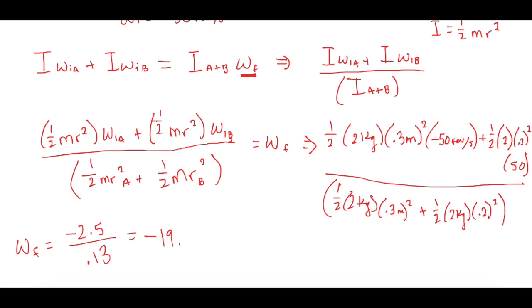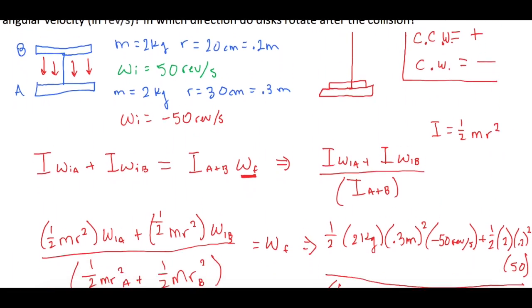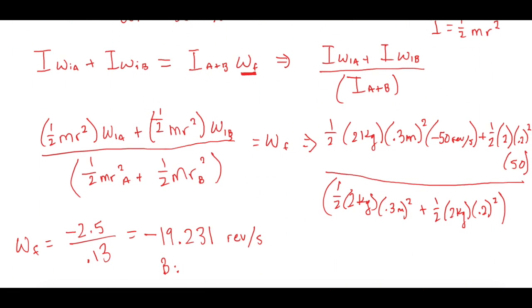So when we take negative 2.5 and divide that by 0.13, that gives us a negative 19.231 revolutions per second. Okay, so the magnitude, when you put this in Mastering Chemistry, just put in the positive value. So we will say it was going 19.231 revolutions per second. And then for part B, they will ask us what direction it was going, and we said it was negative. So when we go back to the top, negative means clockwise. So the direction it was going was clockwise. And that's it.